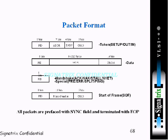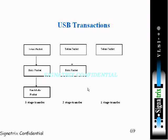We have a CRC associated with each frame, so that's important. Also, the PID field exists in all of these — the start of frame, the handshake, the data, and the token packets. So PID is one of the important fields.